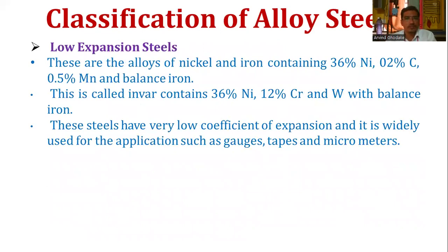The next classification is low expansion steels. These are alloys of nickel and iron containing 36 percent nickel, 0.2 percent carbon, and 0.5 percent manganese, with the balance being iron. This is called Invar. A variant contains 36 percent nickel, 12 percent chromium, and vanadium with the balance of iron. These steels have a very low coefficient of expansion and are widely used for applications such as gauges, tapes, and micrometers.